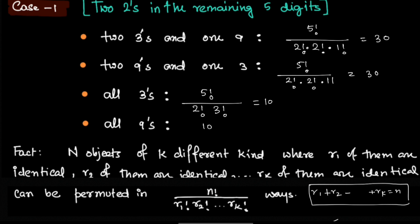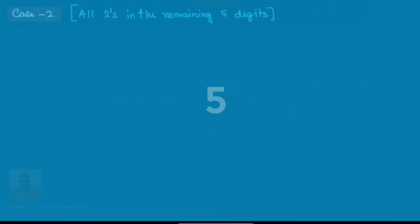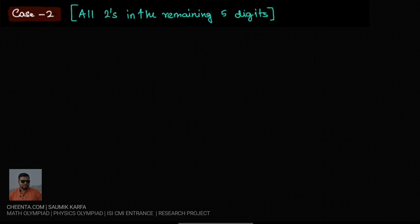In case 2 we can have all of them are 2s - all 5 digits are 2 and the last one is also 2. So there exists only one such number.